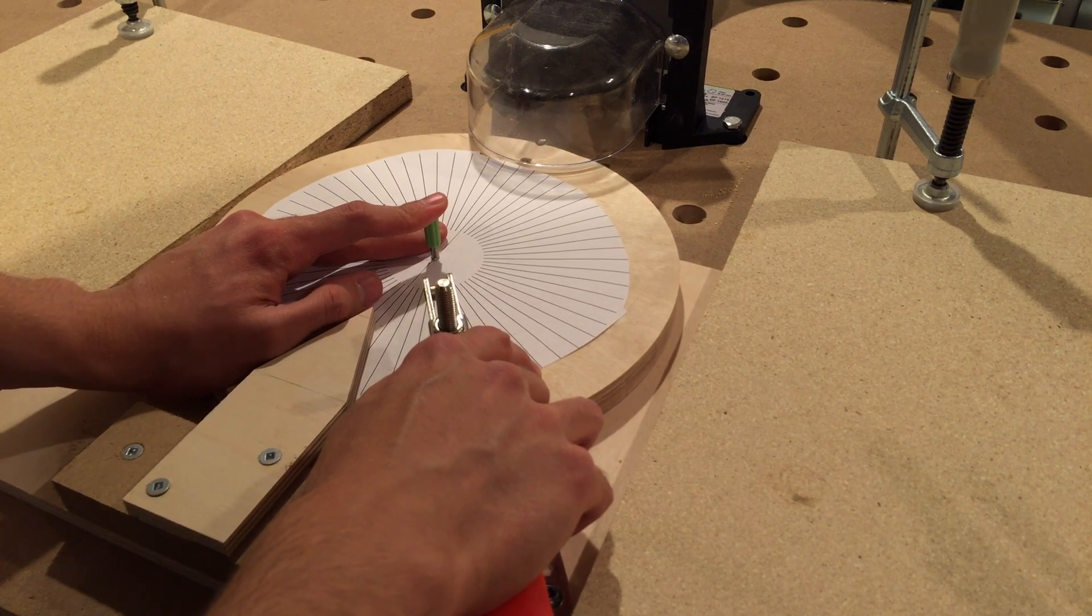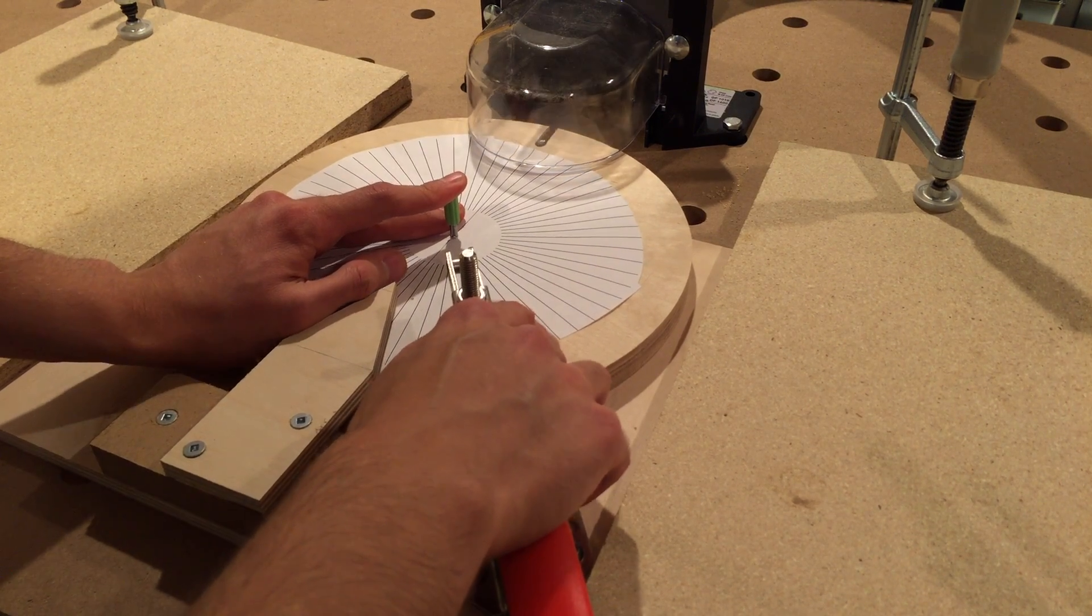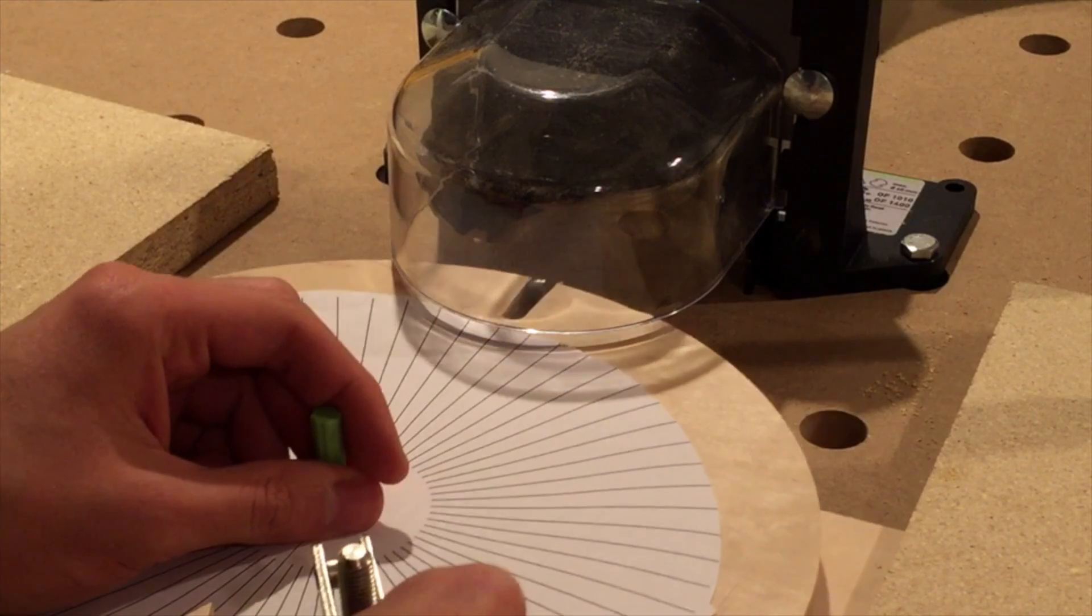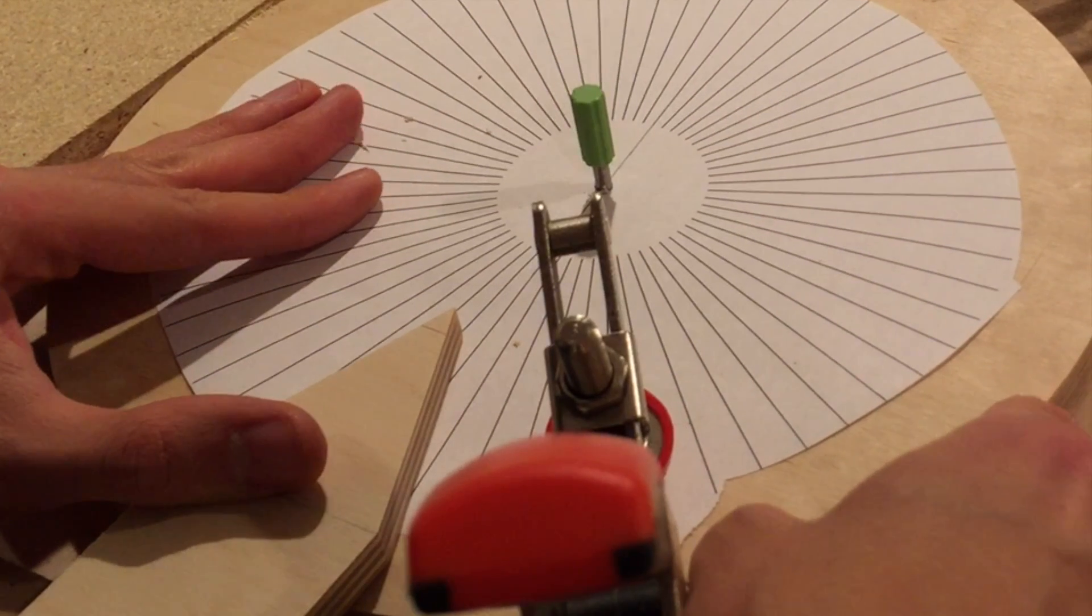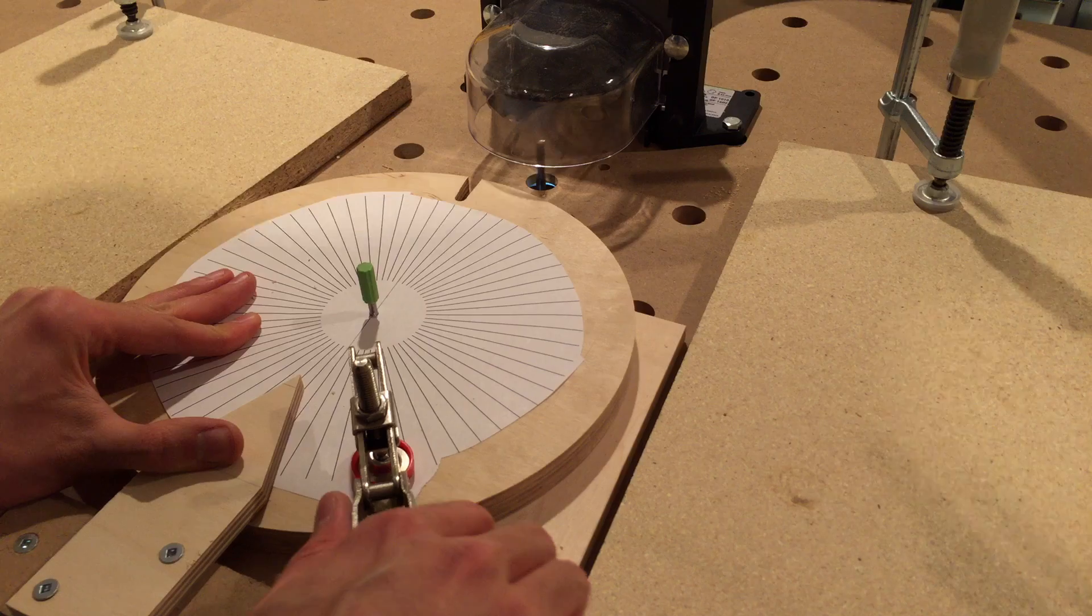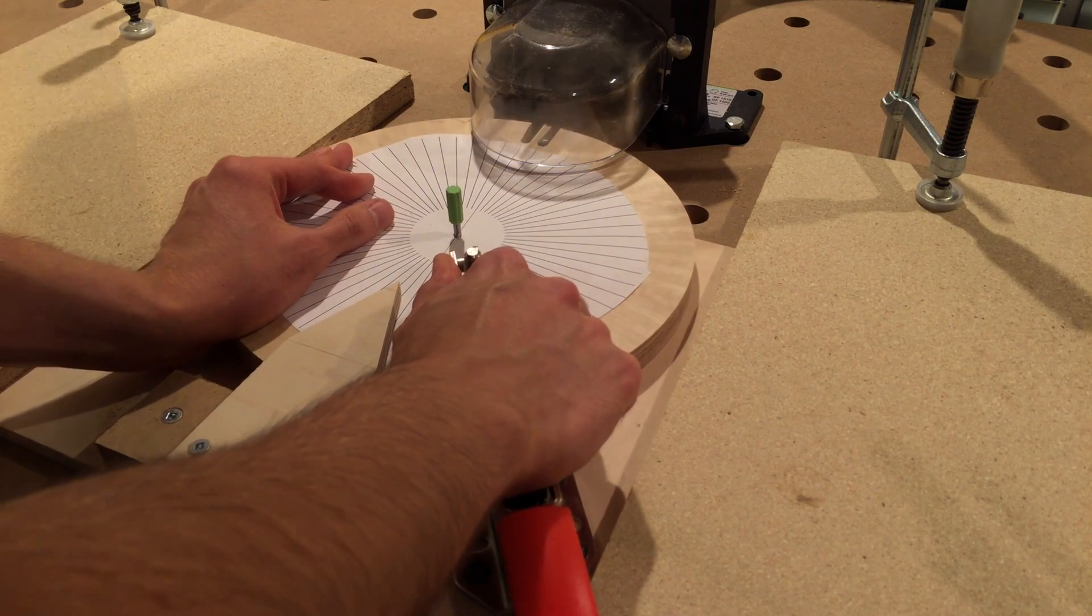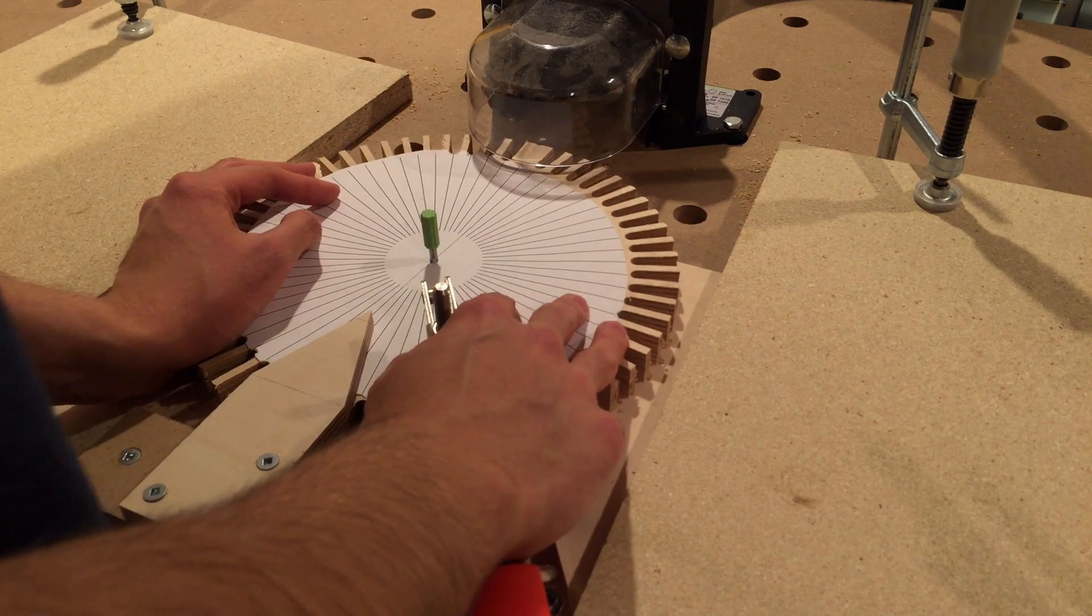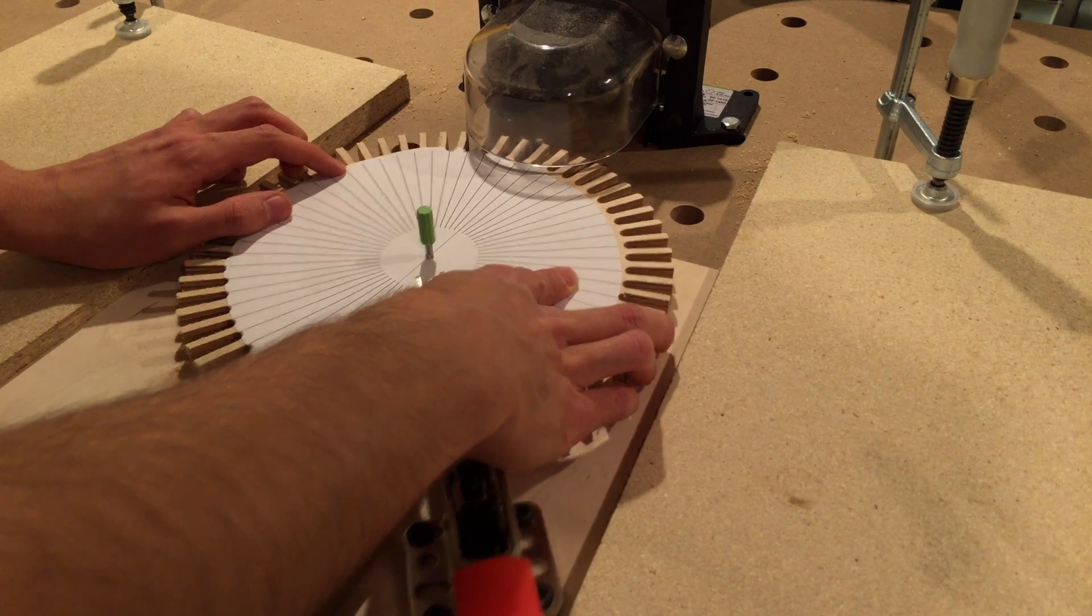When cutting, follow the right side fence on the push stroke and follow the left side fence on the pull stroke. Repeat for each mark. After a few minutes, I have a perfectly shaped gear.